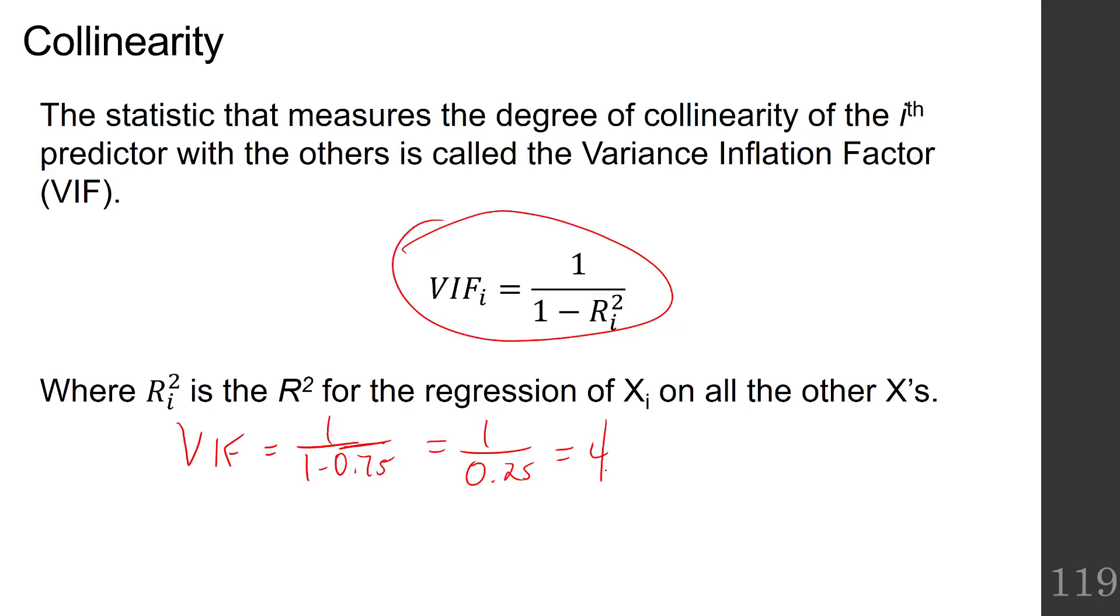What happens if the r squared of a single predictor against all the others is 80%? Then my VIF is 1 over 1 minus 0.8, which is 1 over 0.2, which is 5. And what happens if my r squared of one predictor against all the others is 90%? Then the VIF is 1 over 1 minus 0.9, which is 1 over 0.1, which is 10. These three illustrate where the common cutoffs are for what we consider high collinearity according to our VIF.